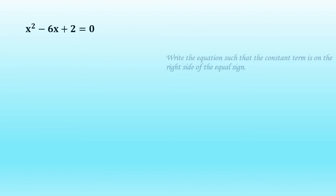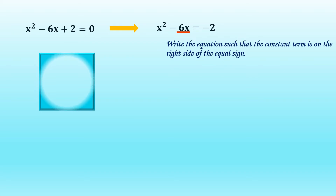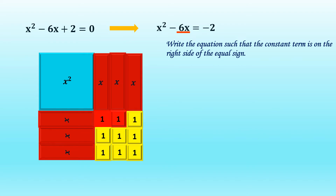Illustrating x squared minus 6x plus 2 equal to 0 by completing the square using algebra tiles. Write the equation such that the constant term is on the right side of the equal sign. We arrange the algebra tiles: our large blue tile to represent x squared, and 6 rectangular tiles — 3 on the right side of the blue tile and 3 below — and 2 red unit tiles to represent negative 2. We are supposed to form a square, but those are the only tiles we have, so we are going to add more tiles.